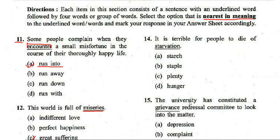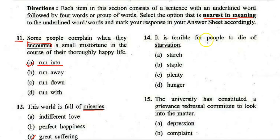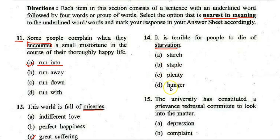Next: 'It is terrible for people to die of starvation.' Options: A. Starch, B. Staple, C. Plenty, D. Hunger. The correct answer is D — 'hunger.' 'Starvation' is a synonym of 'hunger.'